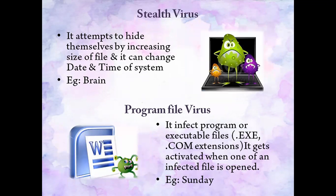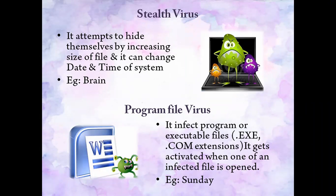Next is memory resident virus. It fixes itself inside computer memory and gets activated every time the operating system runs — so every time your Windows starts. Examples are CMJ and MEVE. Next is stealth virus — it attempts to hide itself by increasing the size of a file and can change the date and time of your system automatically. For example, an image file of 500 MB might get increased to occupy 100 MB more space. The example of this virus is Brain virus.